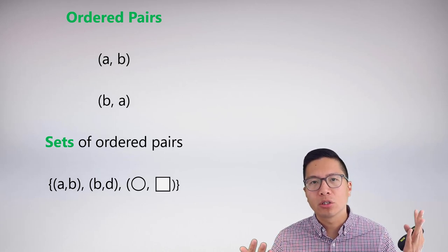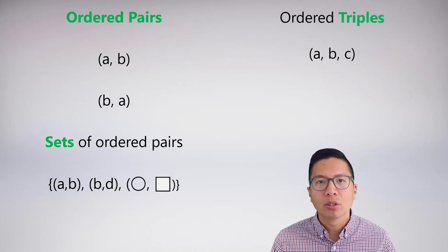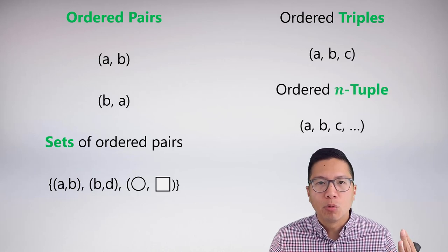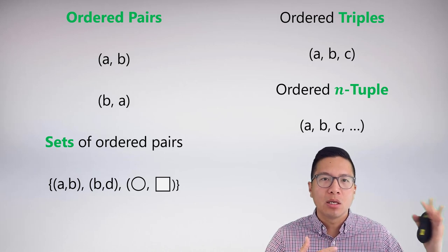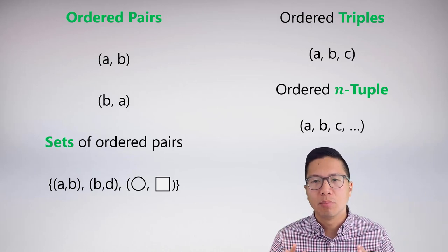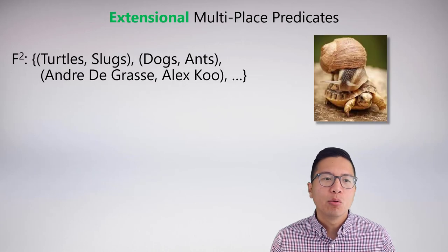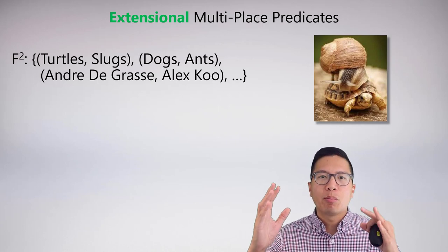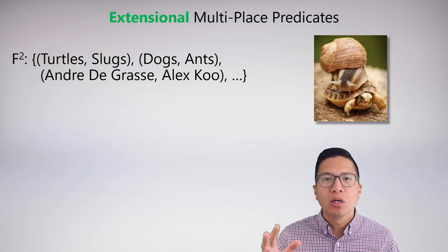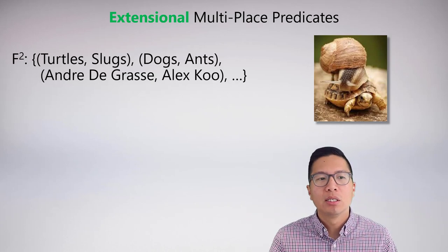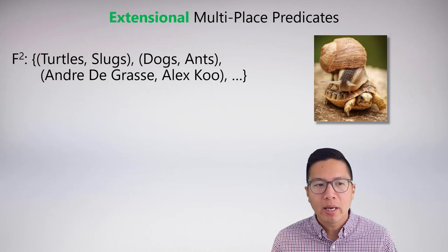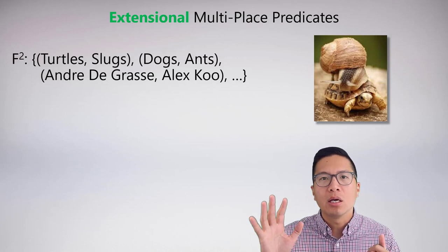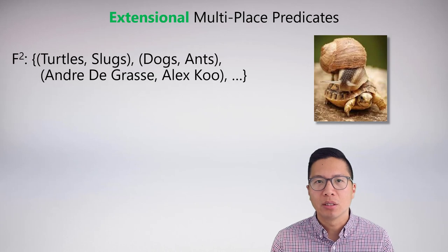We can extend this beyond just ordered pairs. We can take ordered triples, ordered quadruples, and so on — in general, an ordered n-tuple with n elements where order still matters. Given this, we can extensionally define multi-place predicates. For 'faster than,' we would list all ordered pairs where one thing is faster than the other: turtles-slugs, dogs-ants, Andre DeGrasse-Alex Koo, and so on. Everything standing in the 'faster than' relation would appear in this extensional predicate.